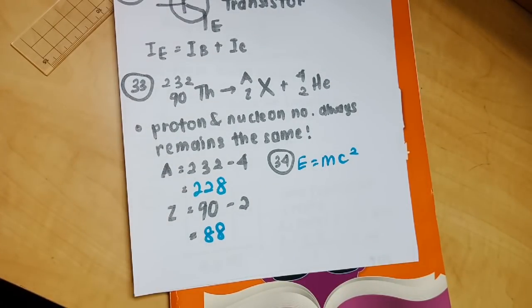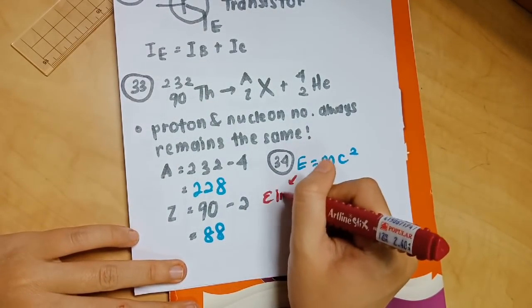Number 34, the last one: E equals mc squared. E refers to the energy in joules, M is the mass defect in kilograms.